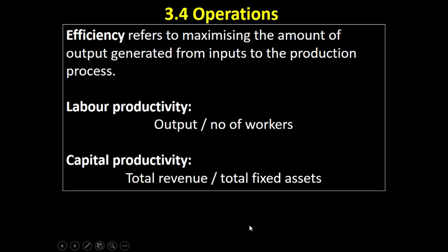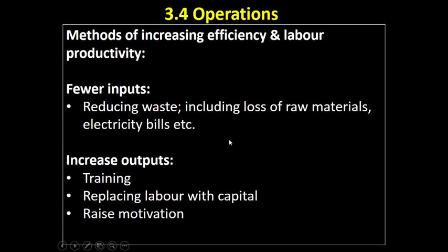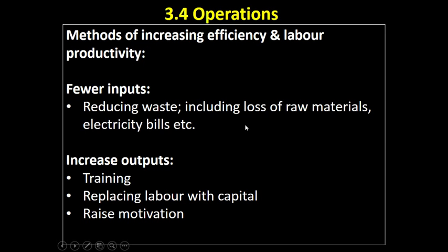Methods of increasing efficiency and labor productivity fall into two basic approaches. First, we can reduce our inputs while keeping output the same. This includes reducing waste and using fewer raw materials in the production process, which lowers our input costs without sacrificing what we produce.